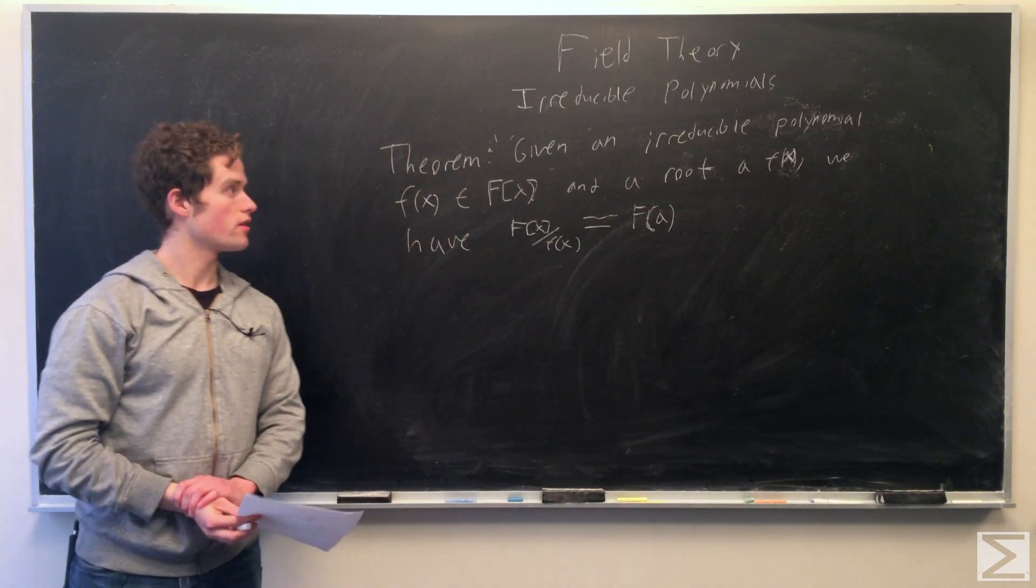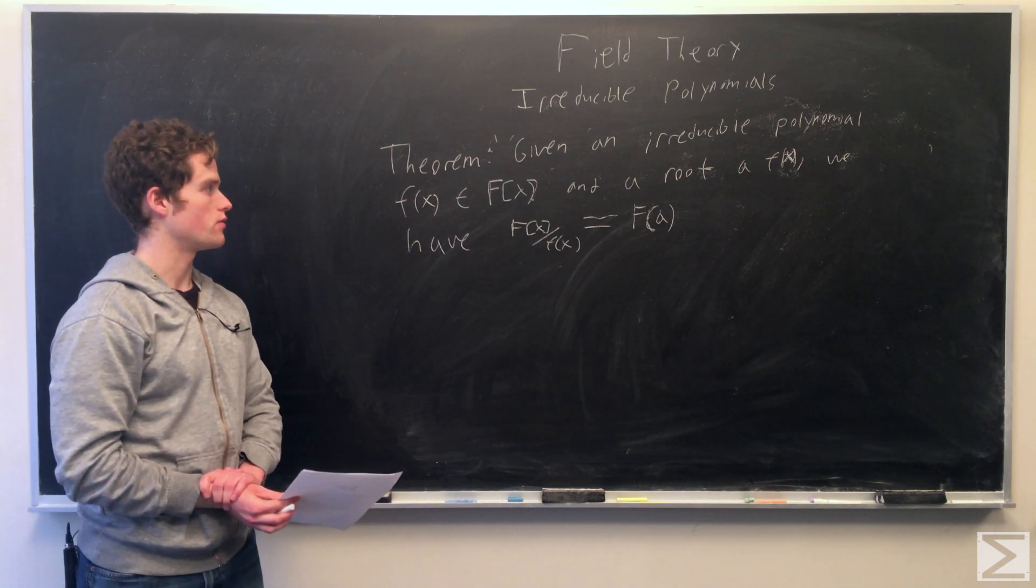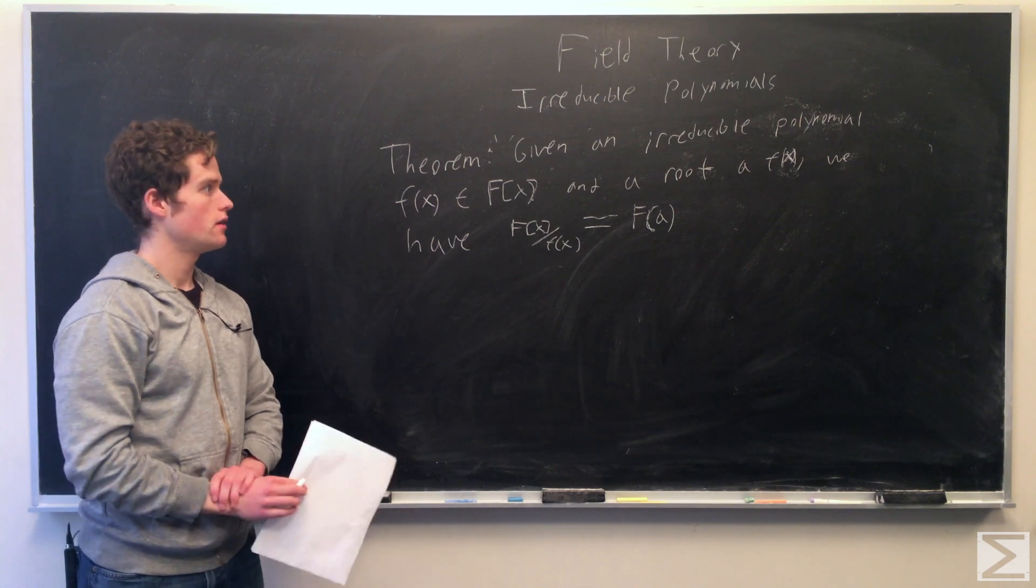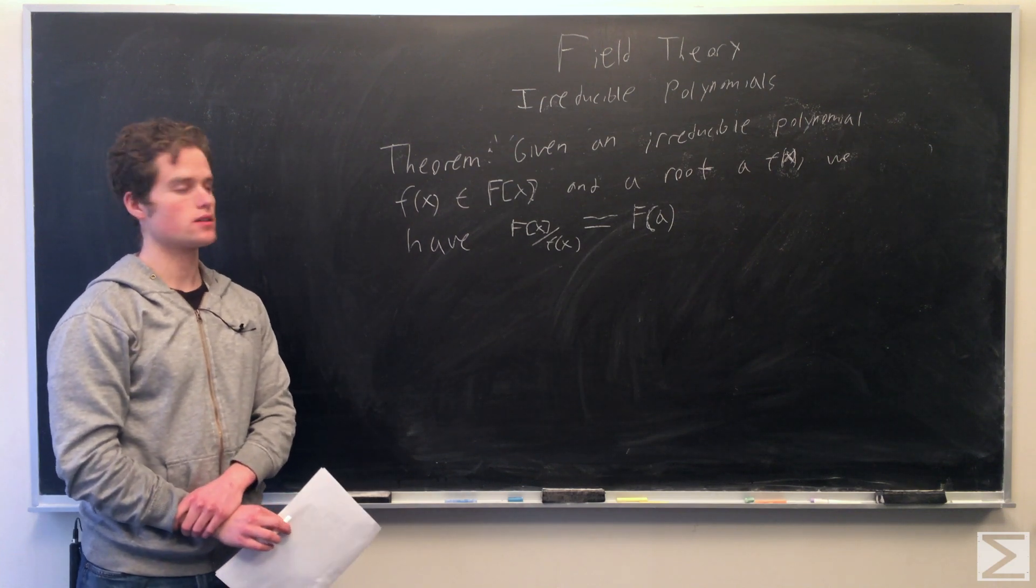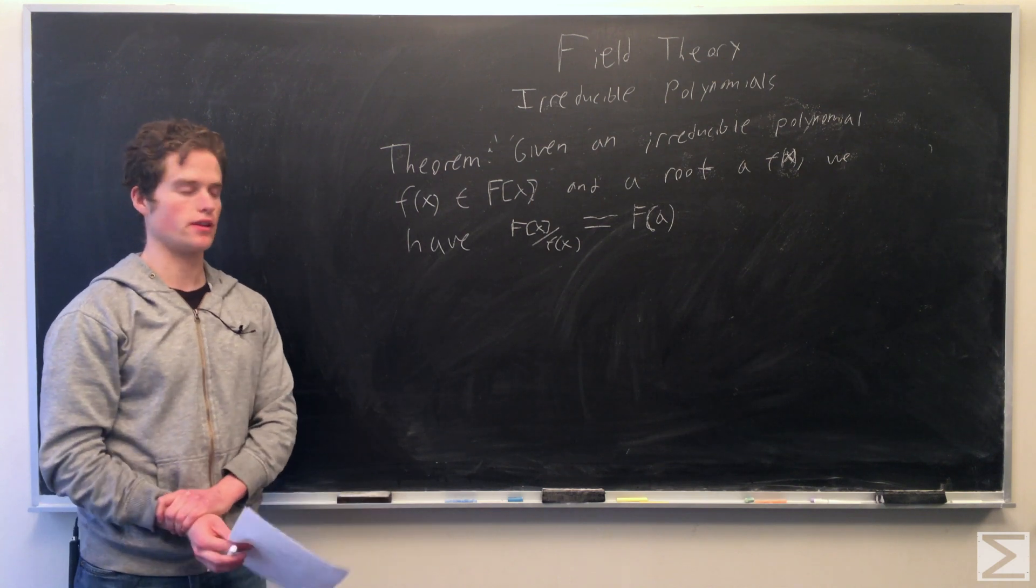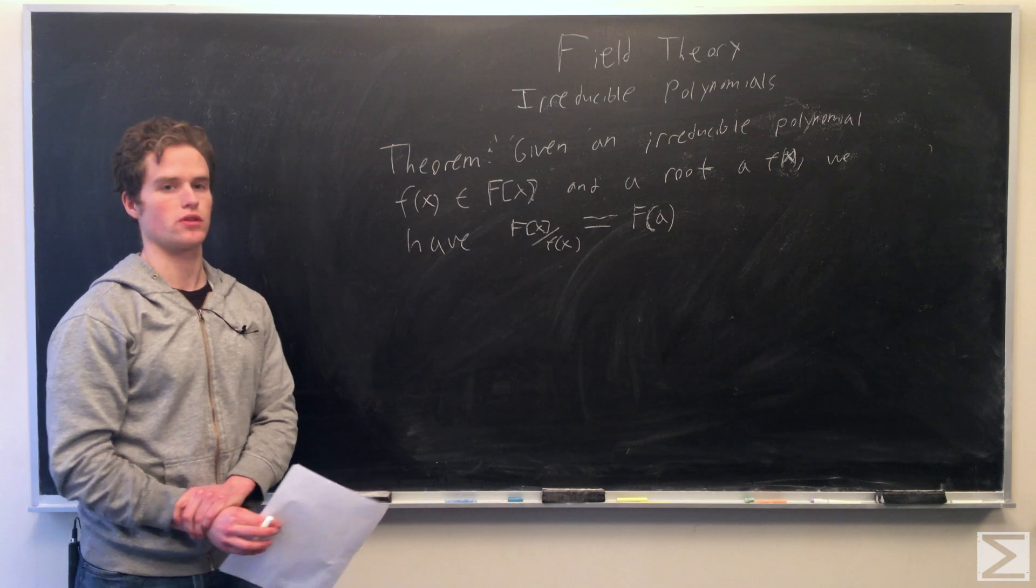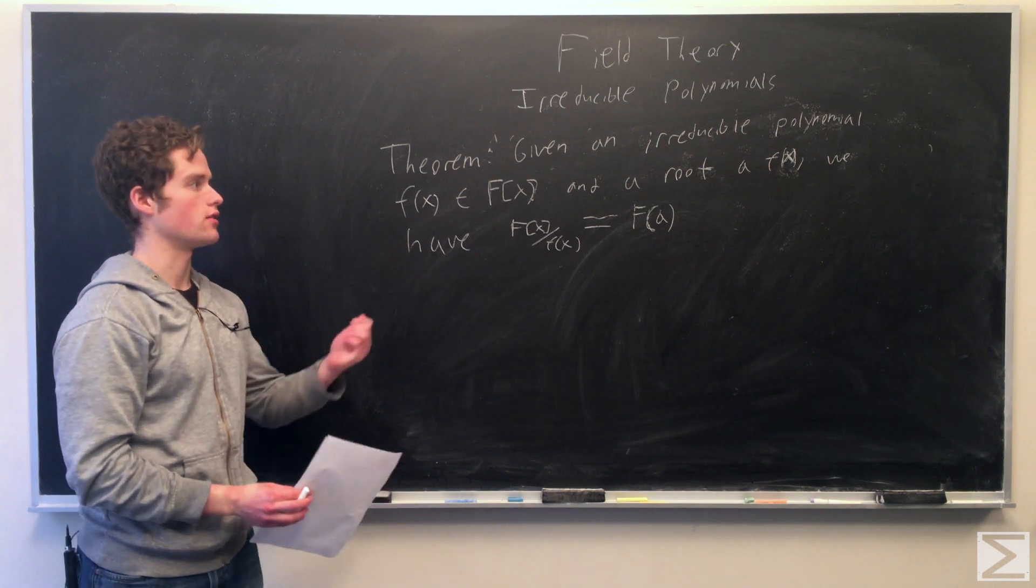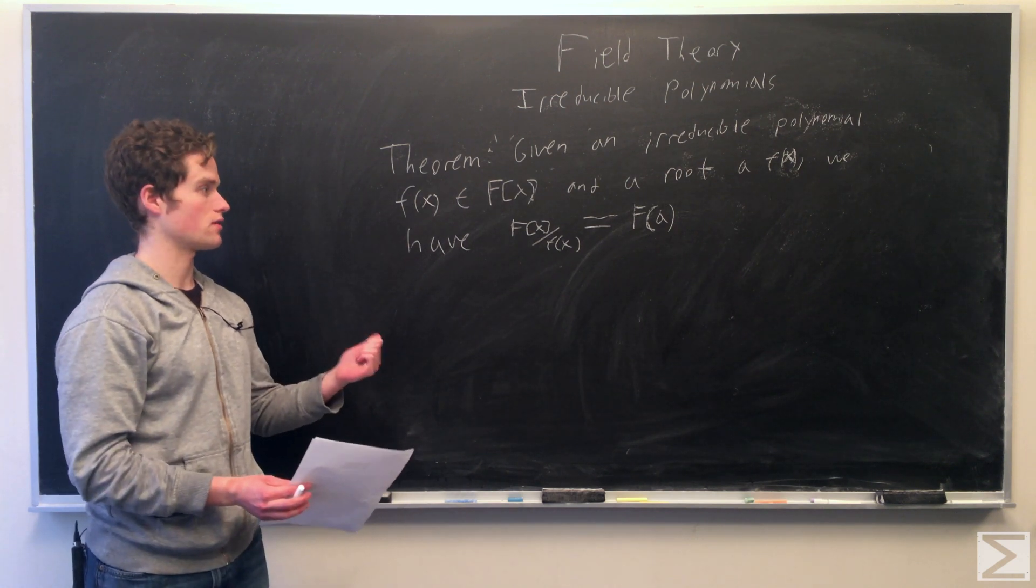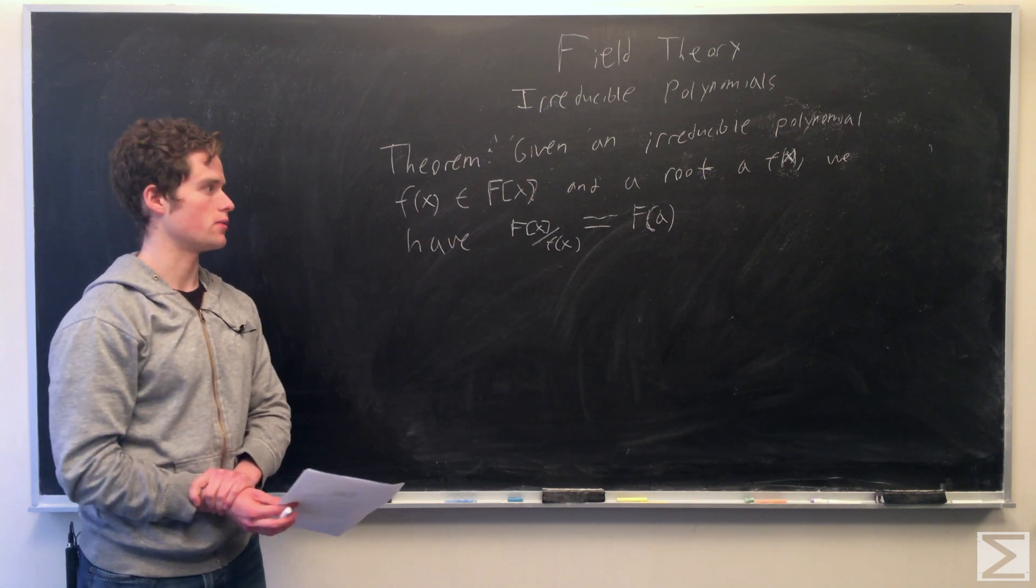So one more theorem. We have given an irreducible polynomial f of x with coefficients in our field F, and the root a of f of x, we have that our quotient ring F of x mod f of x is isomorphic to F with this root a appended to it. It's isomorphic to the smallest field containing F and a, our element a.